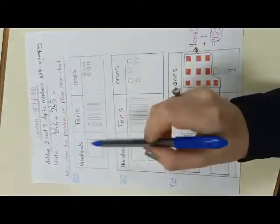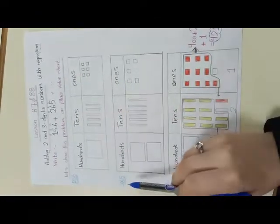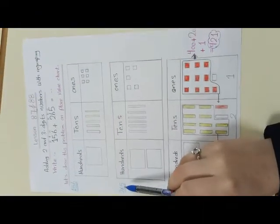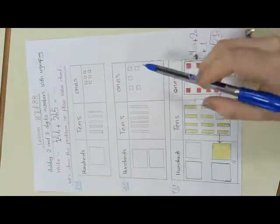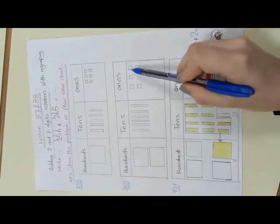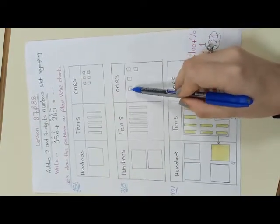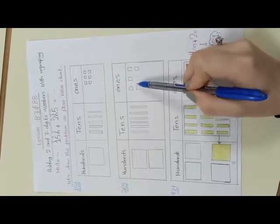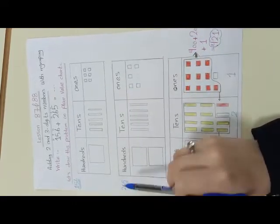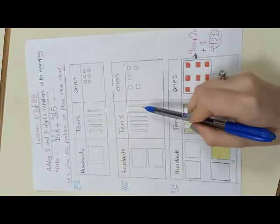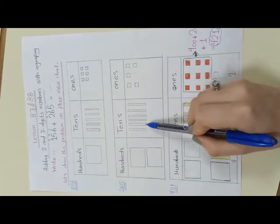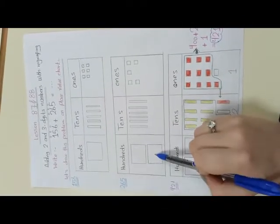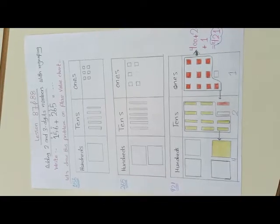The second number is 265. In ones I have 5, so I will draw 5 little squares in ones: 1, 2, 3, 4, 5. And 6 sticks in tens: 1, 2, 3, 4, 5, 6. And 2 in hundreds. Now I want to make addition — this means I will collect all I have.